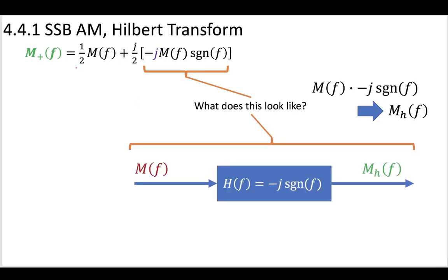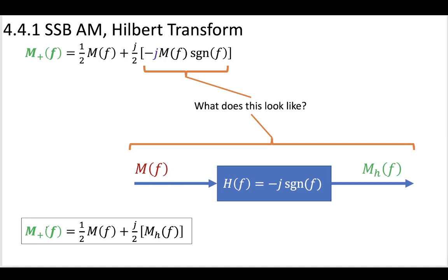So this part of our definition of M plus is the message that's undergone a phase shift. So this is a message. We have two parts of this. The first part is the message that's been halved, and then the second part is j/2 multiplied by a message that's undergone a phase shift via this Hilbert transformer. So we have the Hilbert transform message. So M plus can now be defined in terms of both the original message and the message that's undergone a π/2 phase shift.